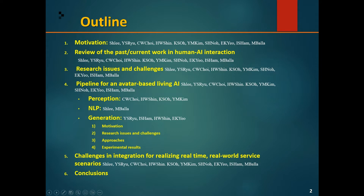I will go over these topics in the order they have been presented. First, I will explain why we need to study these topics and why we need them in our living social robot. Then I will explain the past and current works, how AI has played a role, the research issues and challenges, the pipeline for each topic, and finally the conclusion.